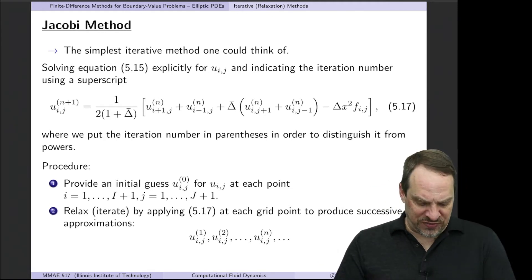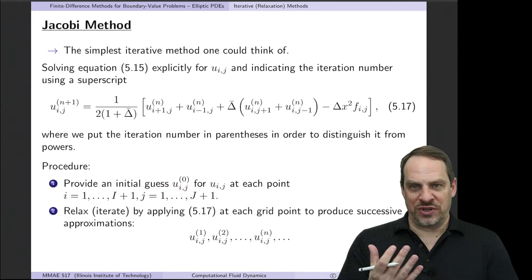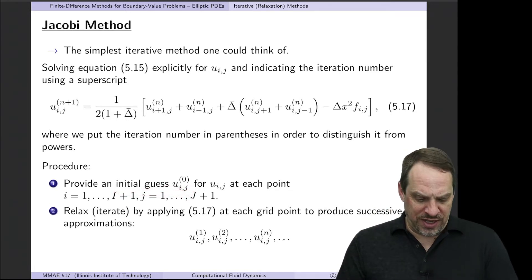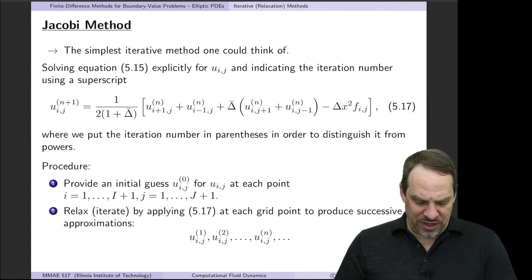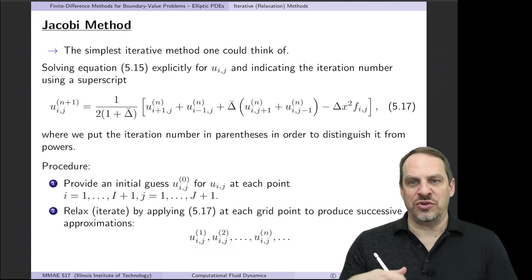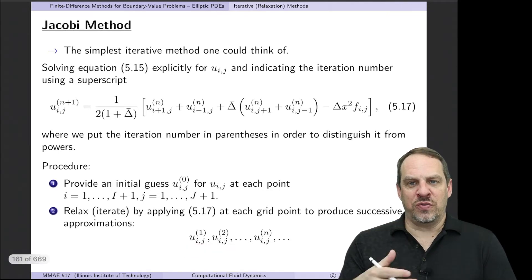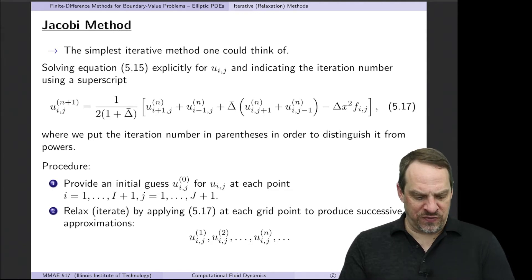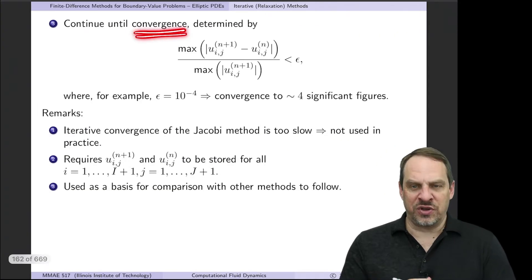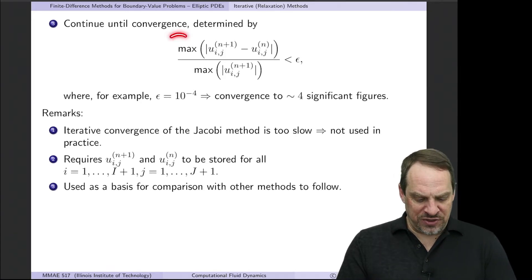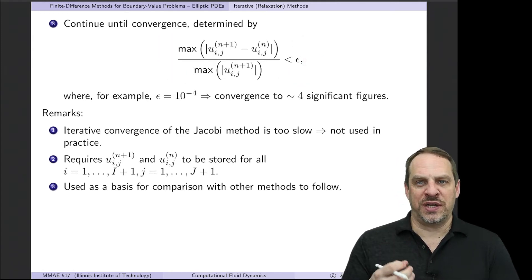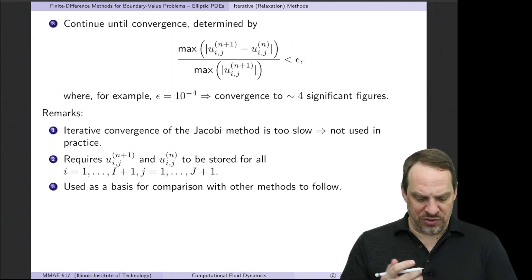The basic procedure is as follows: we start with an initial guess u_ij^0 — usually all zeros — applied at every point in the grid. Then we relax or iterate by applying the Jacobi equation at every point, sweeping through the grid, leading to successive iterations u^1, u^2, u^3. As we iterate — often hundreds, thousands, even tens of thousands of times — we need to test for convergence. A simple yet effective test requires very little computational overhead.